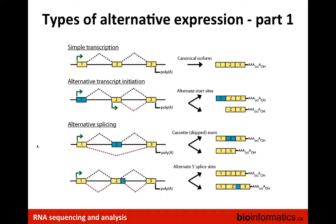Alternative splicing — we've seen an example of this in IGV — involves a cassette exon, where there are effectively two paths through the same set of exons. With three exons, sometimes exon two is skipped and sometimes it's included, using the same transcript initiation and polyadenylation sites. So the outer bounds of the transcripts are the same, but something happens in the middle where exons are excluded or included. This gives a three-exon or two-exon transcript.